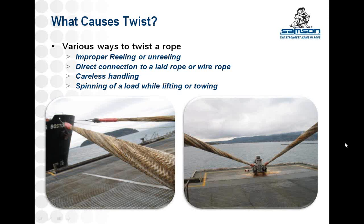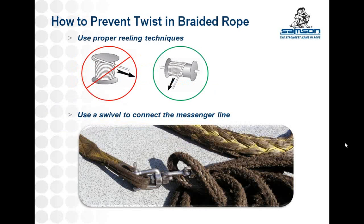Other sources of twist are more obvious, such as careless handling. If you simply flip the eye over and twist the rope, it will remain twisted and won't naturally untwist. Spinning of a load is another cause — if you're lifting something and the load is allowed to spin, you can twist up your rope that way as well.